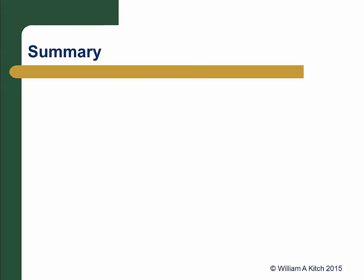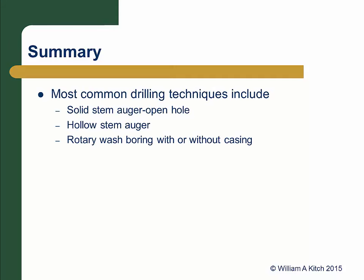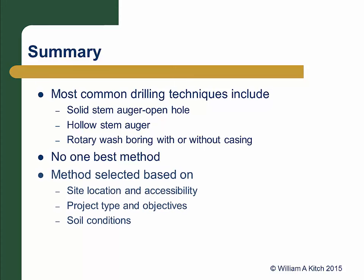So let's summarize. There are many types of drilling and sampling methods. In this presentation, we have presented a few of the most common: the solid stem auger method with an open hole, the hollow stem auger method, and the rotary wash boring method, which can be used either with or without a casing. Each method has its pros and cons, and there is no one best method. The drilling method selected will depend on a number of factors, including the location and accessibility of the site, the type of project and its objectives, and the soil conditions.